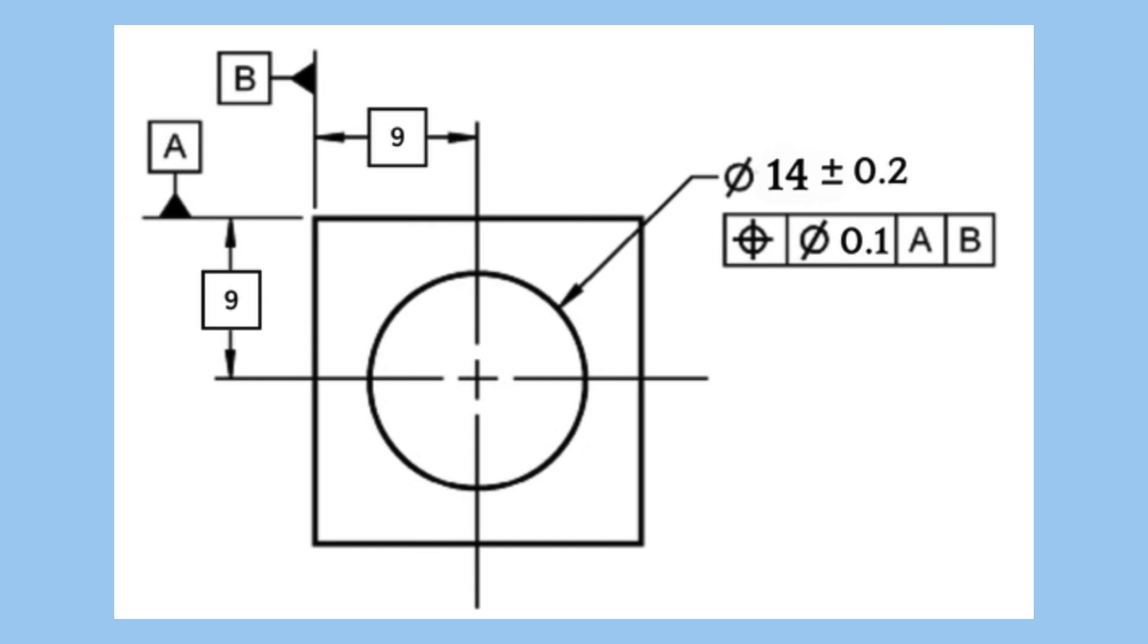Now let's see how it is marked on the drawings. True position is indicated by boxed numbers, and the position tolerance is defined by several boxes in the feature control frame. Let's go over them one by one.